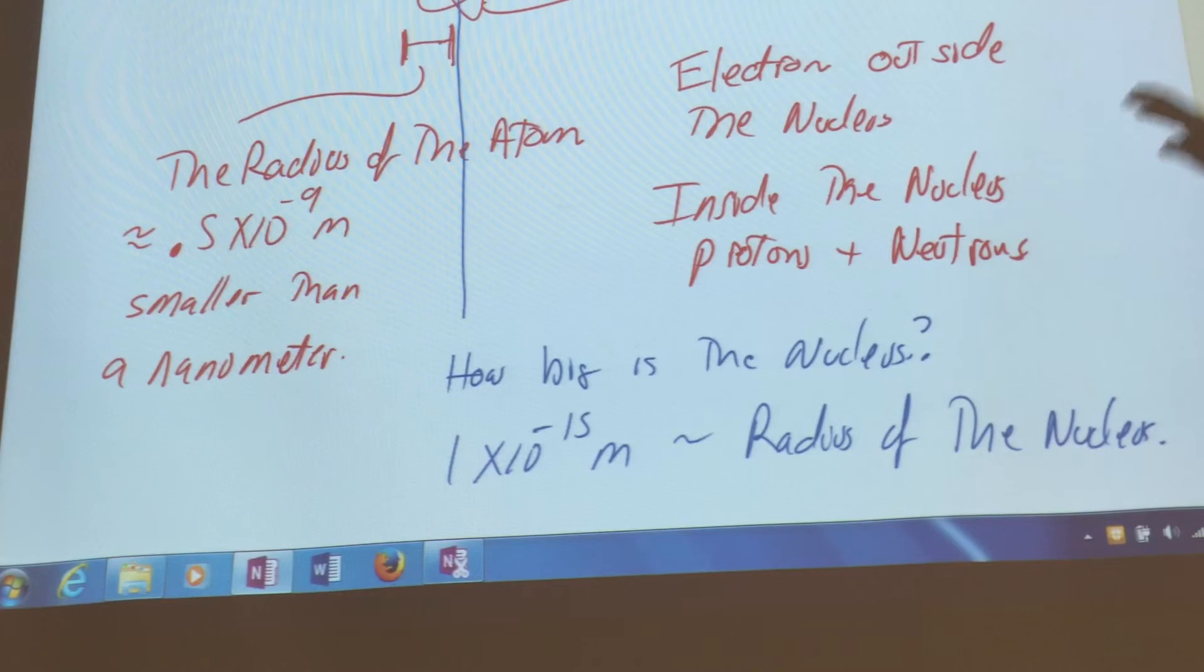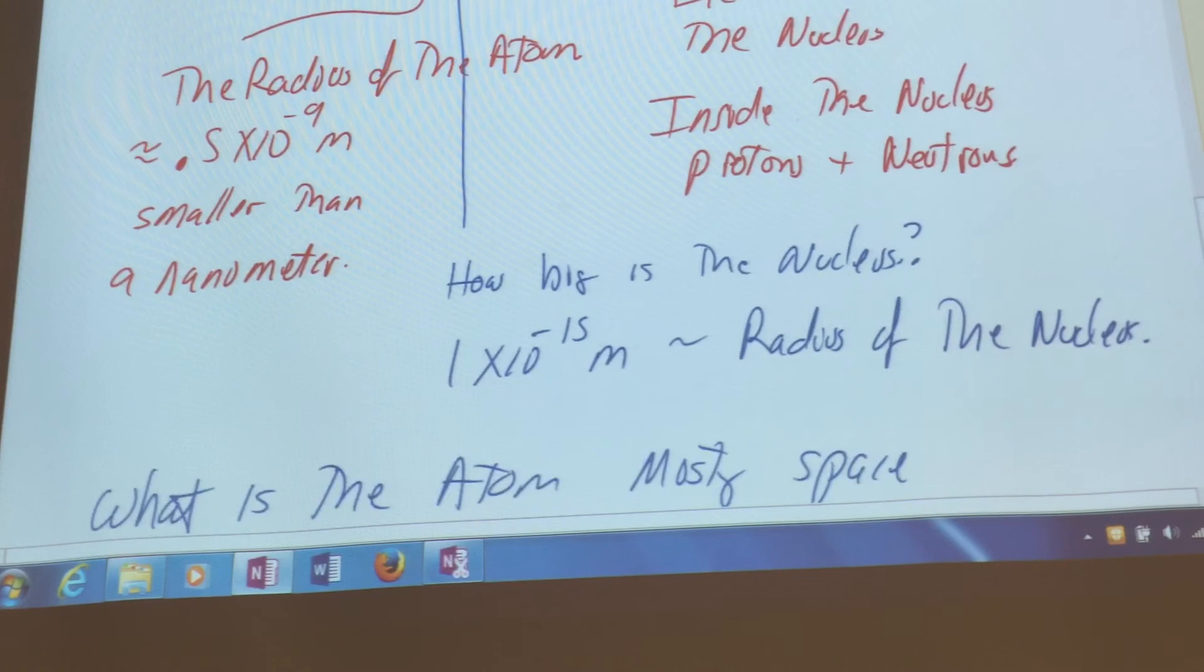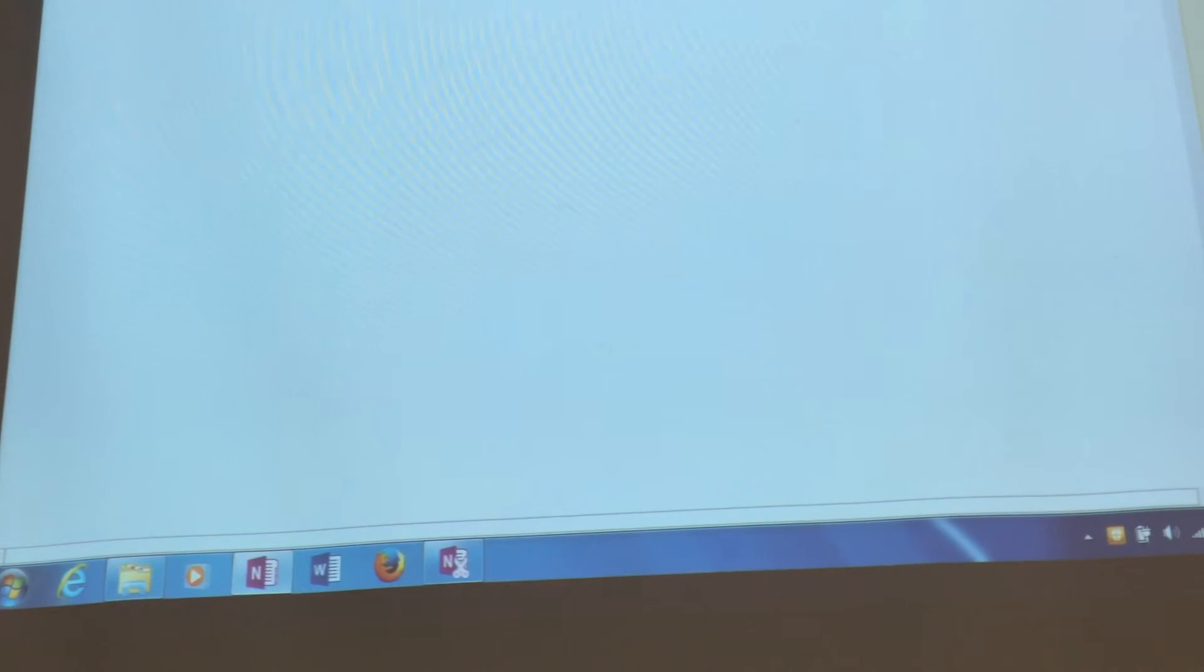It's clearly wrong in the orbitals. It's also wrong in the size, the relative sizes. Looks like the nucleus is about maybe a quarter of the size of the atom. That's clearly wrong. Nucleus is just way, way, way smaller than the size of the atom.